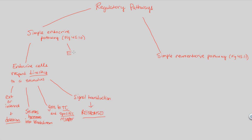A good example of the simple endocrine pathway is pH regulation in the duodenum, which is part of the small intestine — the number one point of absorption in digestion. Food consumed passes through the stomach and its strong acid before entering the duodenum. The stomach contents, with their extremely low pH, enter the duodenum.